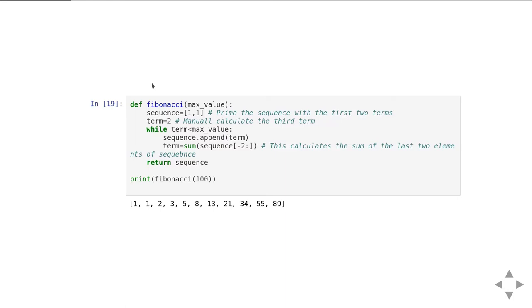We are also going to keep hold of a calculation of the next term that we're adding to the sequence. Then we have a while loop which simply says whilst the next term is less than the maximum value, keep on doing the calculation. Inside that while loop we're going to append that new term to the sequence and then calculate the next term.